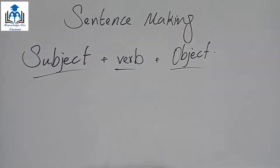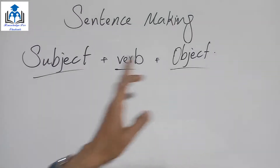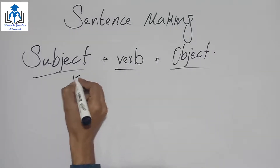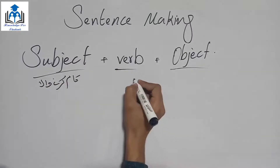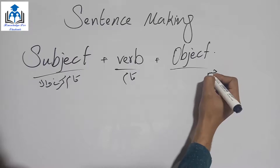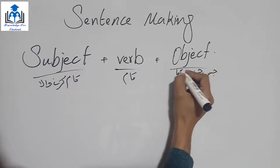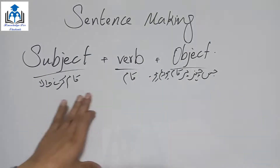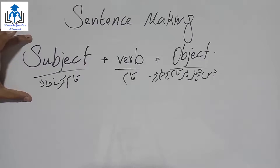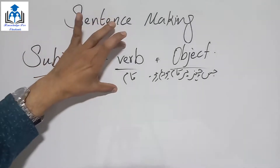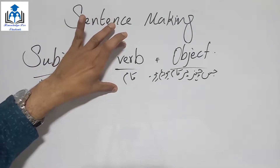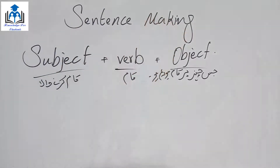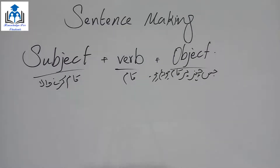So to summarize the structure: Subject = کام کرنے والا (the doer), Verb = کام (the action), Object = جس پر کام ہو رہا ہو (the thing affected). Whenever you translate an Urdu sentence into English, follow this order: first identify who does the action and write its English, then what they do (verb), then what it's done to (object). Using this structure you can make thousands of sentences.